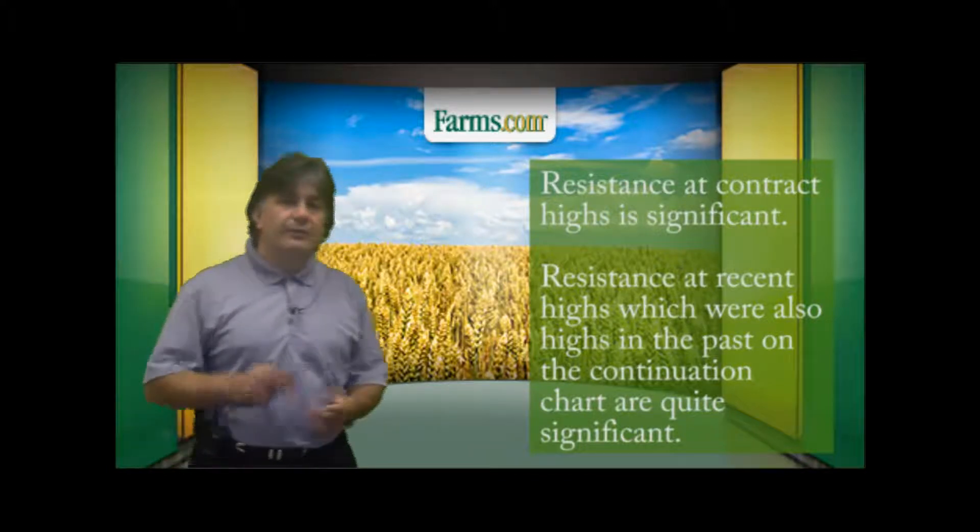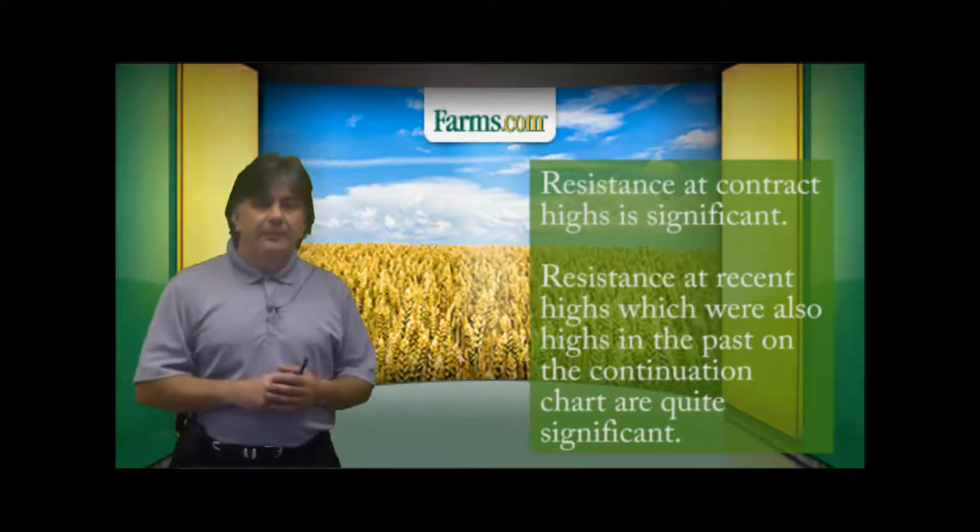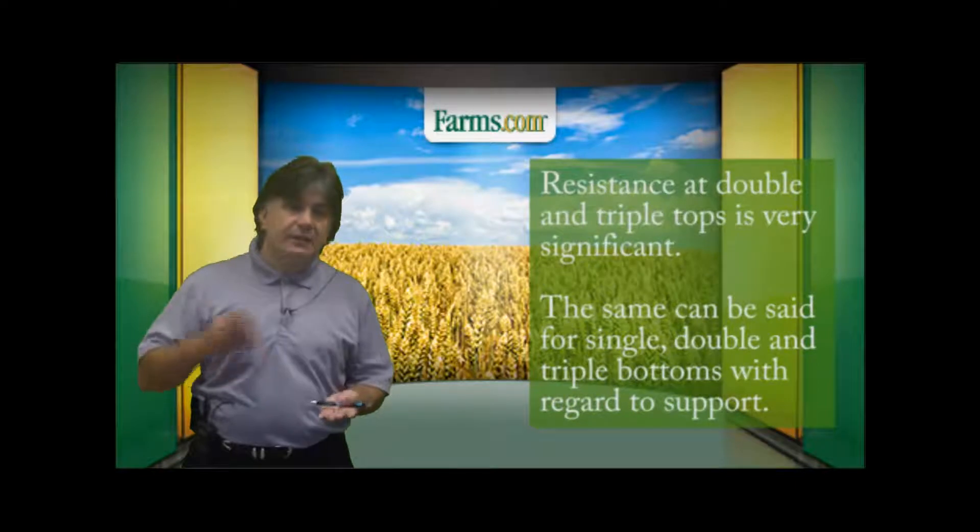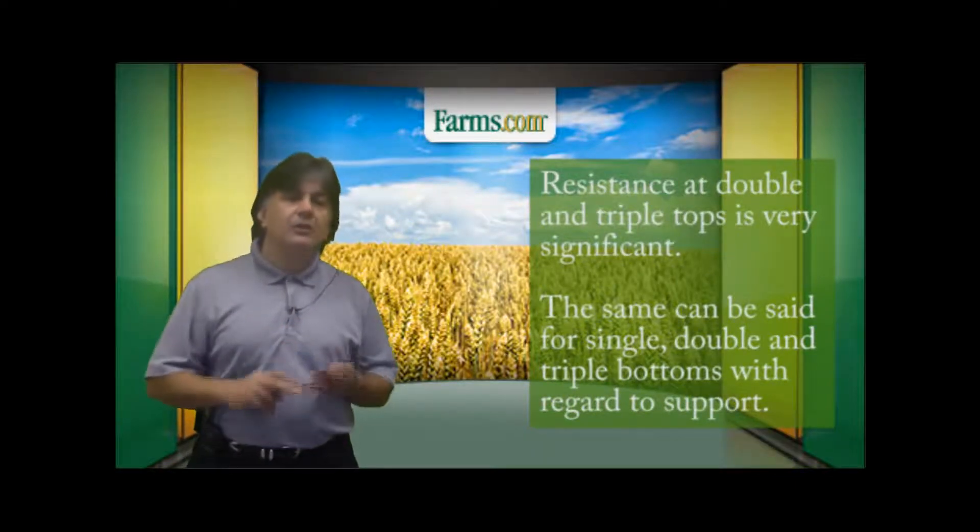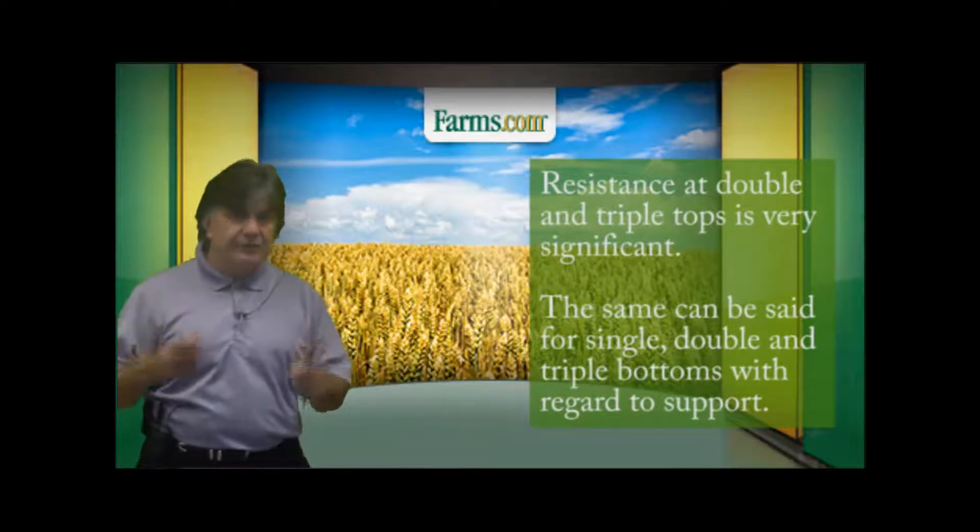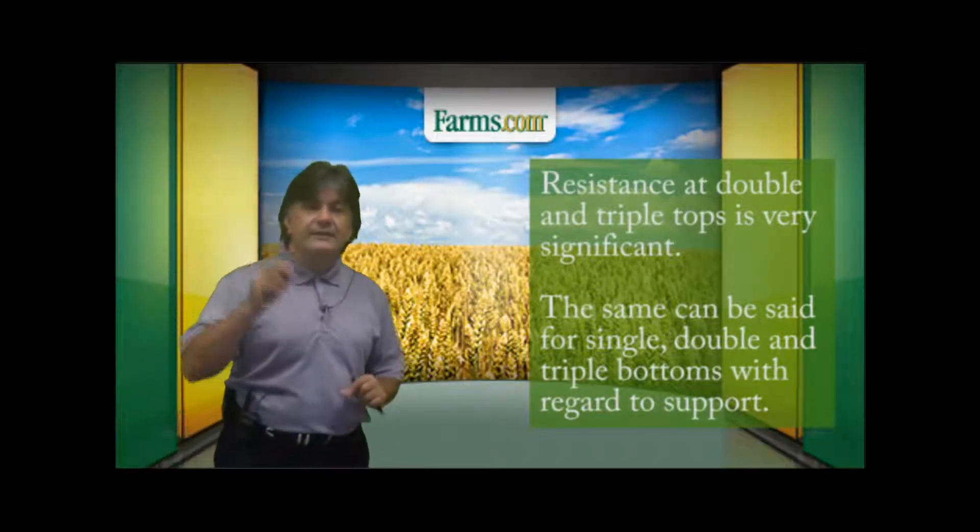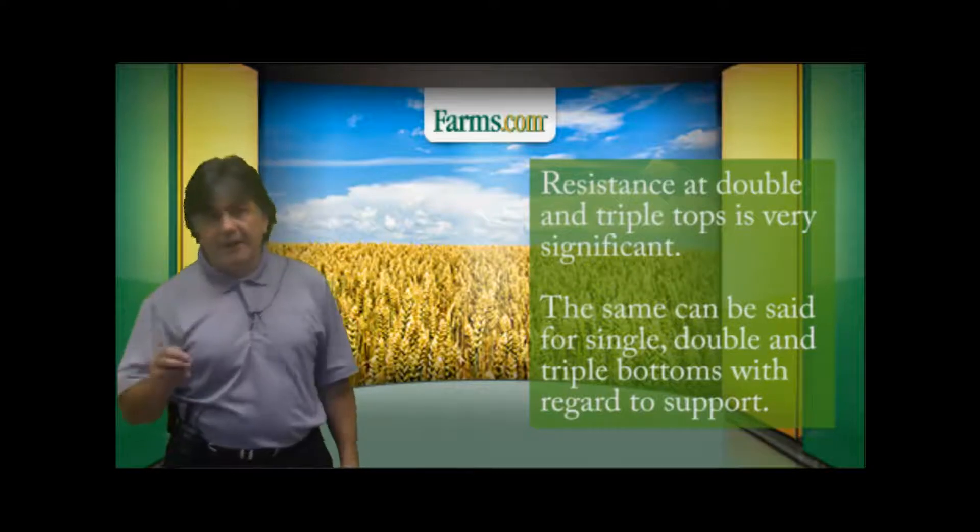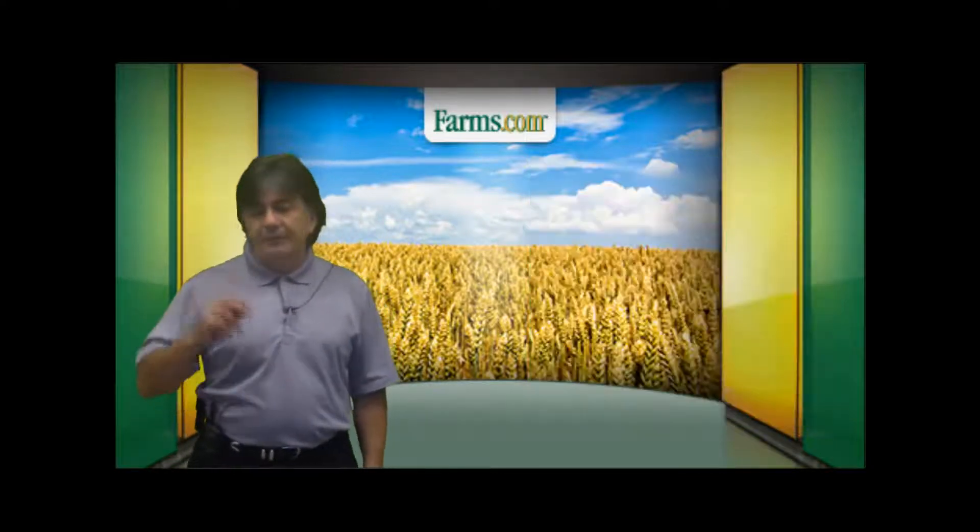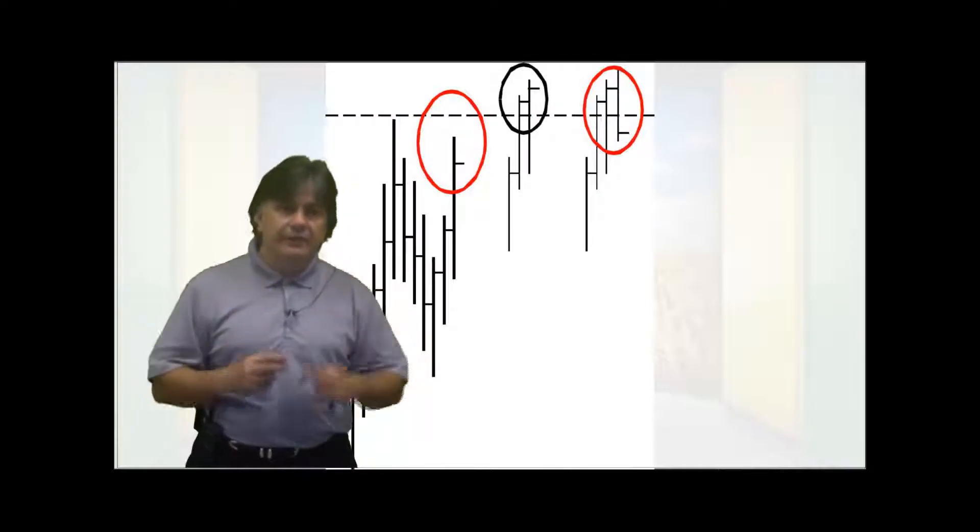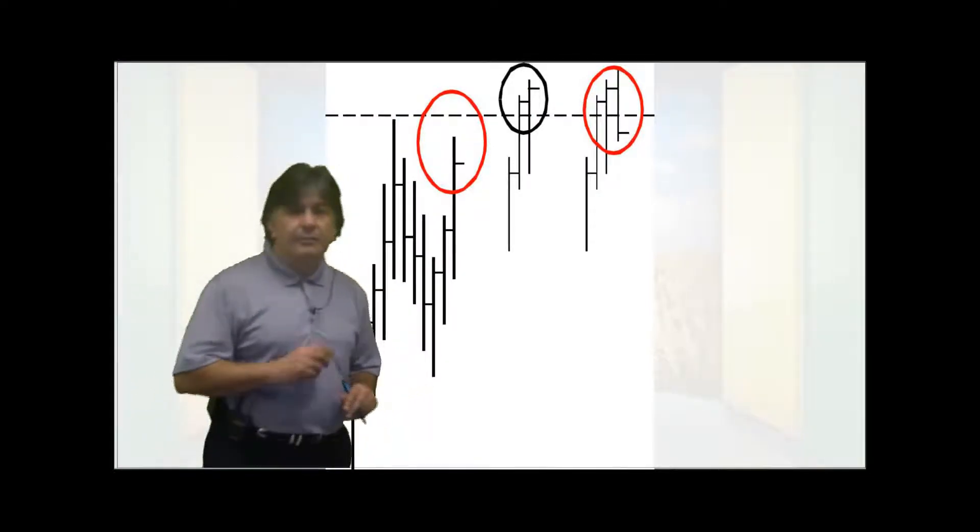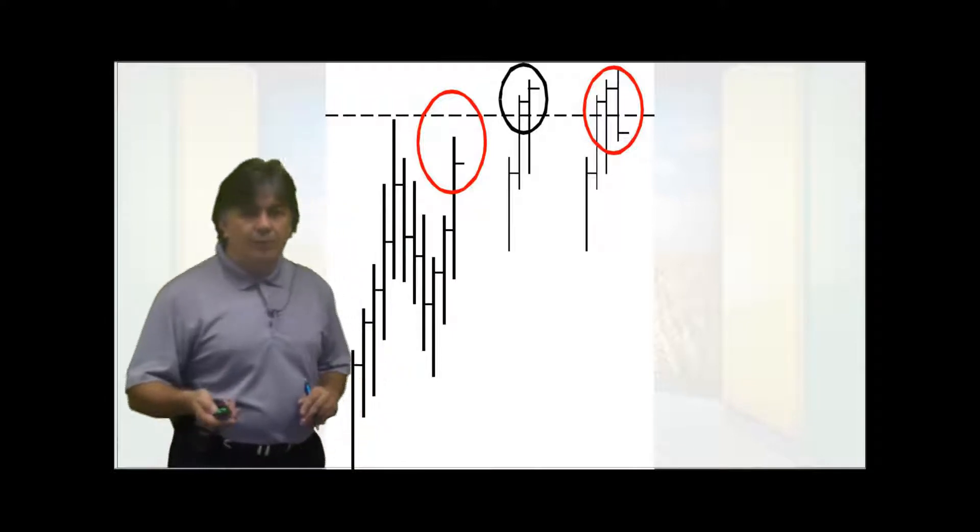So key insights with resistance and support planes. Resistance at contract highs is significant. Resistance at recent highs, which were also highs in the past on the continuation chart, are quite significant. Resistance at double and triple tops, very important. Signaling that the market is most likely to come to an end and that there's going to be a change in trend. And the same can be said for single, double, and triple bottoms with regards to support.